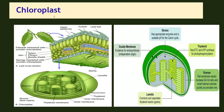Now we will understand about chloroplasts. They are mainly located in the mesophyll cells of the leaf. Have a look at this image — this is a leaf, and here you can see the magnified view showing mesophyll cells. These are called palisade mesophyll cells, and these are called spongy mesophyll cells. Both these cells contain chloroplasts. This chloroplast is taken out and magnified for you.